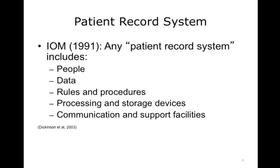So what is an electronic health record? According to the Computerized Patient Record, published in 1991 by the Institute of Medicine, an electronic health record system is defined as the set of components that form the mechanism by which patient records are created, used, stored, and retrieved. A patient record system is usually located within a health care provider setting. It includes people, data, rules and procedures, processing and storage devices — for example, paper and pen — hardware and software, and communication and support facilities.